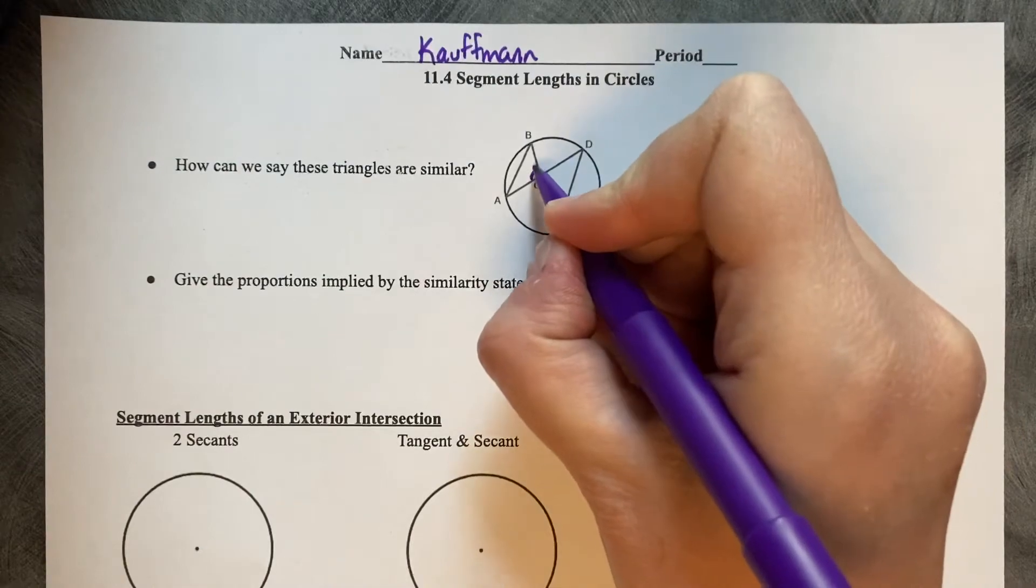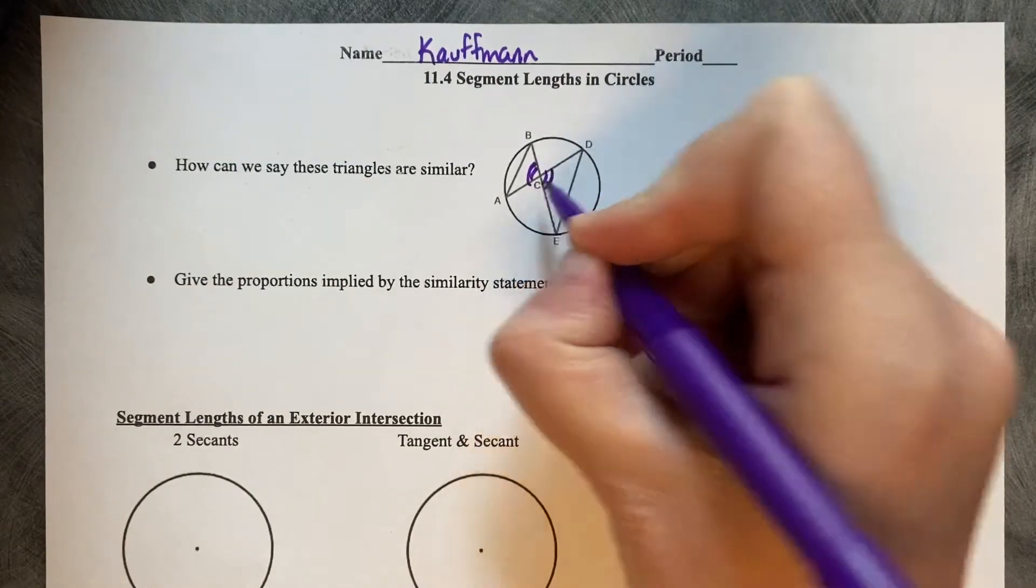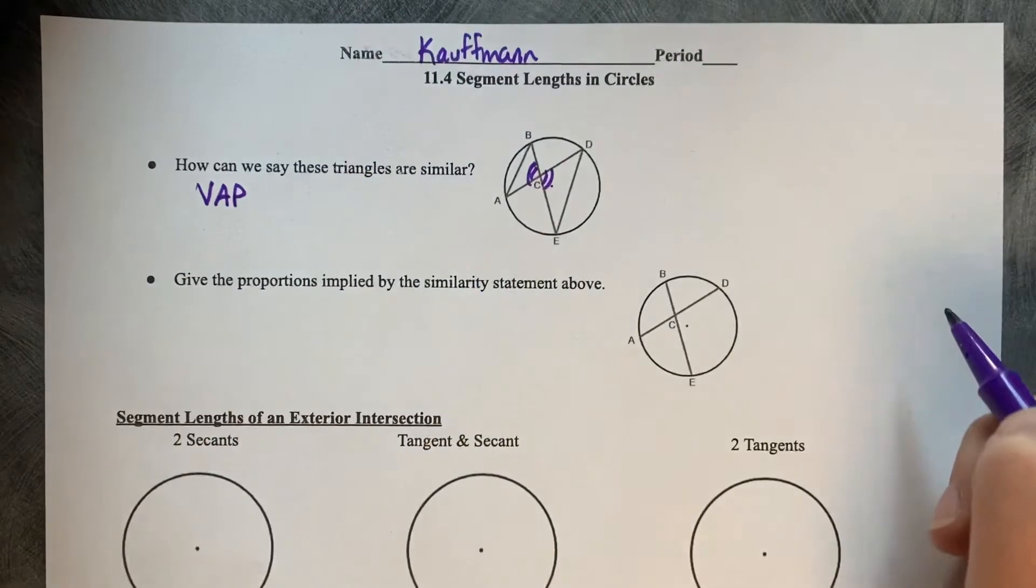Well, first of all, we know that these two angles are vertical angles, so the vertical angles postulate.